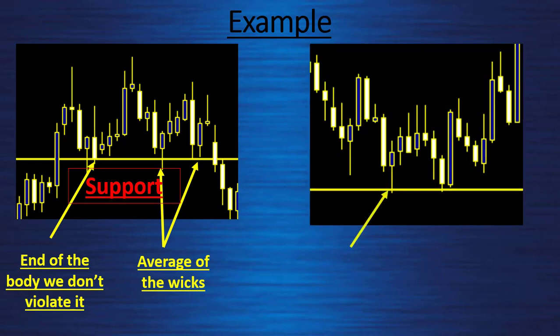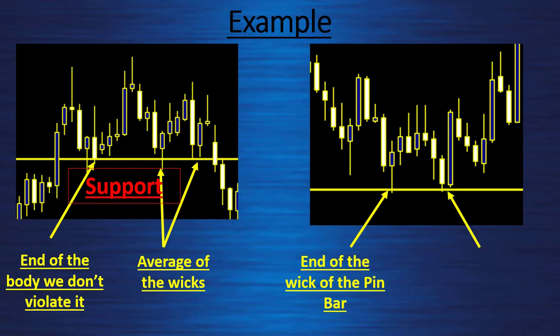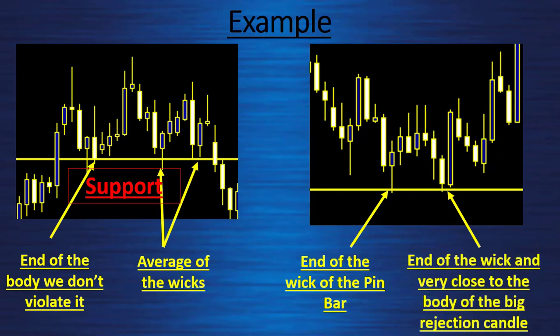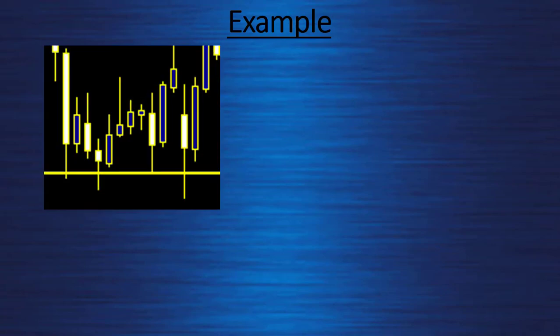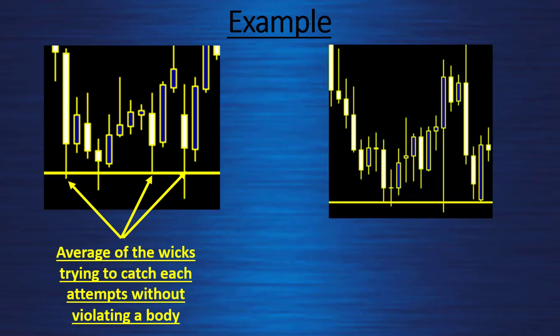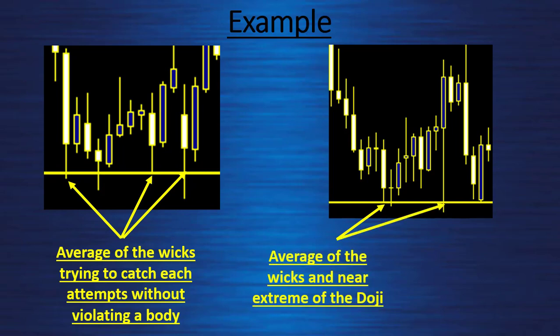Another example: end of the wick of this specific pin bar, and a wick very near the big body candle going out from this specific level. Other example: I took the average of the wick without violating any body. And on this specific one: end of the wick of a doji, a very strong pin bar, and at the end a very strong body rejecting it. So this level as a support is a very strong level.